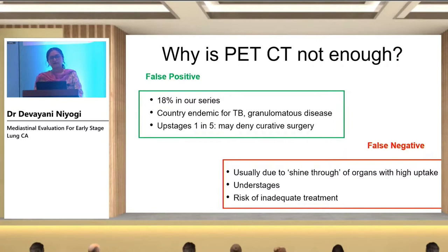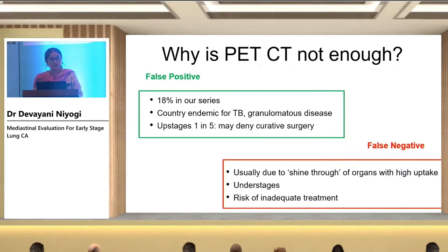Why is PET CT not enough? In all other cancers, a PET scan ends staging. The reason — as Dr. Nilendu will clarify — is that PET CT in lung cancer is prone to both false positives and false negatives. When we analyzed our series at TMH with lymph nodes showing SUV uptake of more than four — which in any cancer would be fairly significant — the false positive rate was 18% in lung cancer. That is one in five patients. India is endemic for TB and granulomatous disease, so nodes affected by granulomas or TB can look hot on PET and end up upstaging your patient significantly.